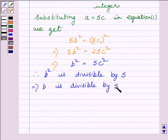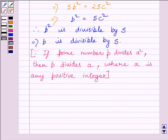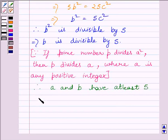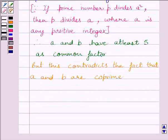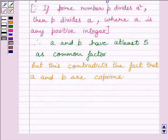This is because if prime number P divides A square, then P divides A, where A is any positive integer. Since A is divisible by 5 and B is also divisible by 5, therefore A and B have at least 5 as common factor. But this contradicts the fact that A and B are coprime. So, our assumption that root 5 is rational is incorrect.